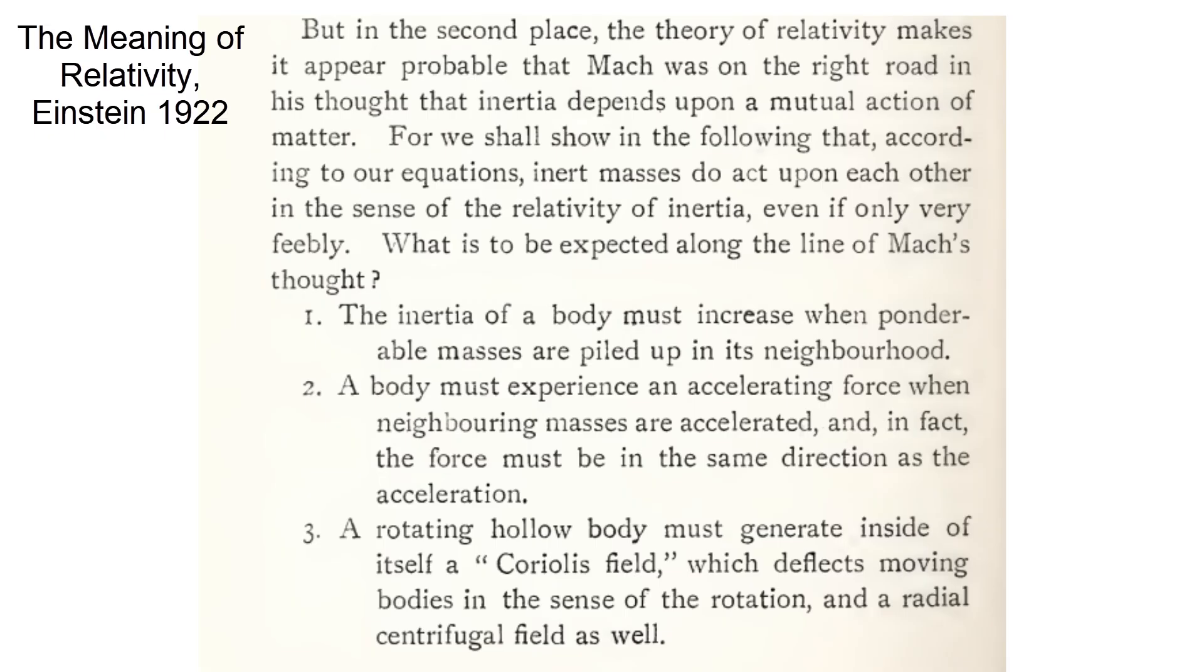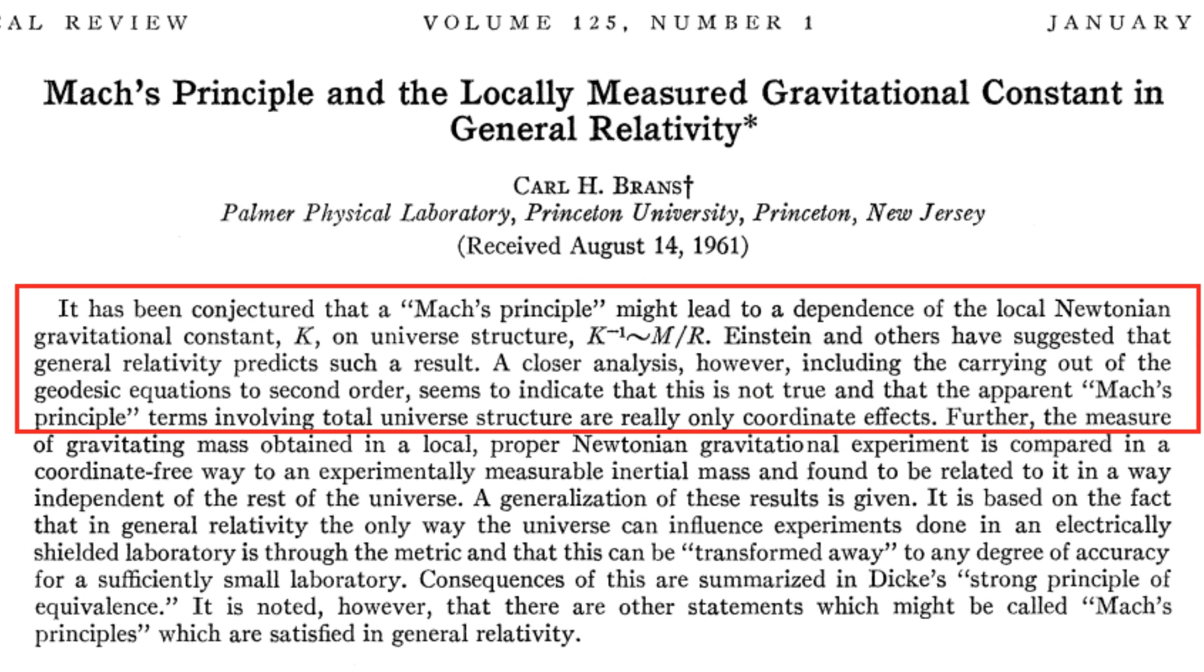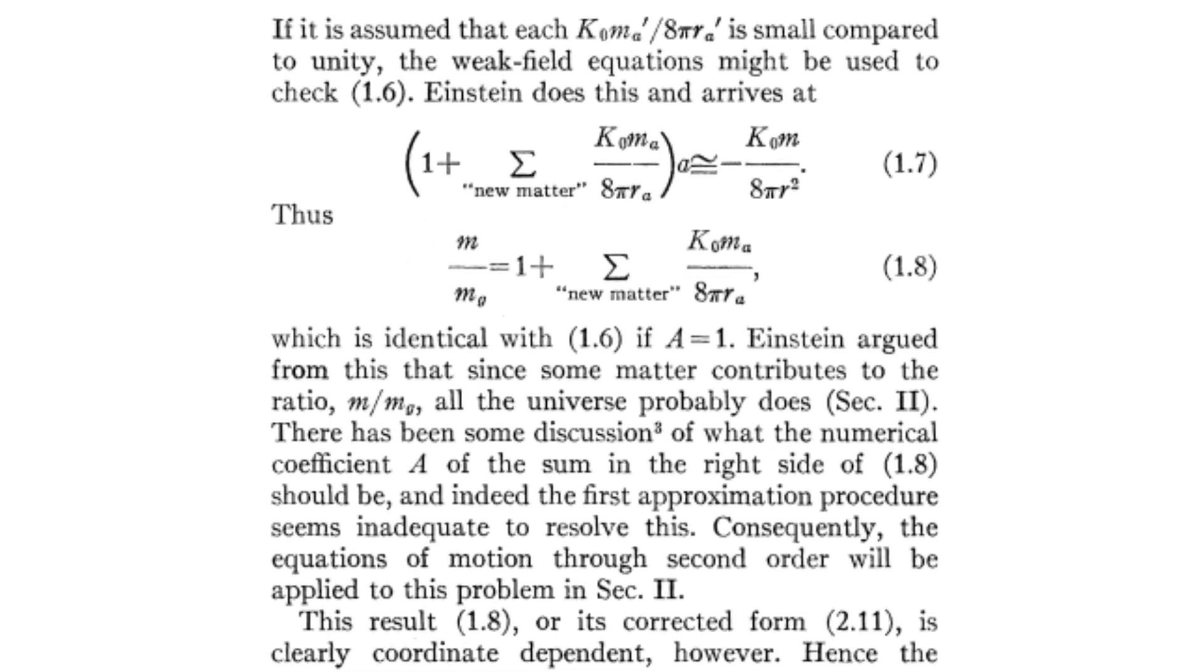The last two consequences were indeed fulfilled by general relativity through frame dragging, one of them being the Lense-Thirring effect, but Karl Brans showed in 1961 that the first one wasn't, and that it was a mere coordinate effect.